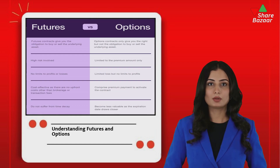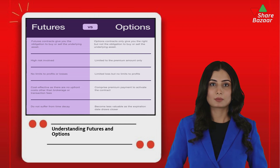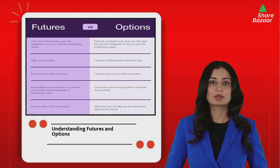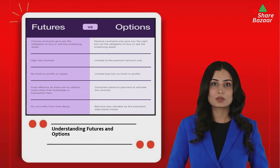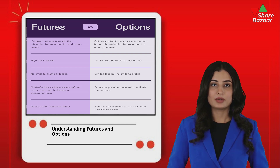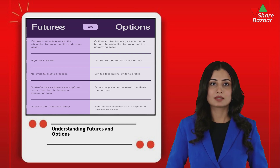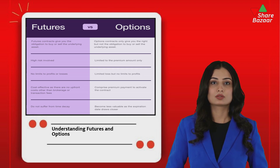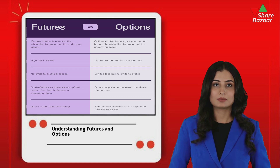Futures contracts allow traders to buy or sell a security at a predetermined price on a future date. For example, traders can enter into a futures contract for commodities like gold or oil, agreeing to trade them at a set price in the future. The trader's profit or loss depends on market movements until the contract's expiration.